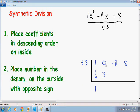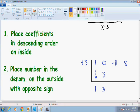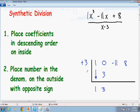Now we need to add the numbers in the second column. So we have a 0 and a 3. So 0 plus 3 gives you a positive 3. And now we need to repeat this process all over again.